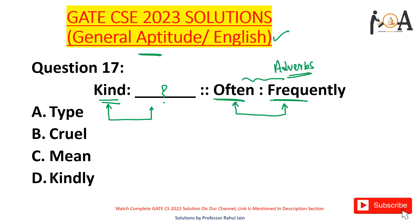Similarly for 'kind', what can you place? The options are: kindly, mean, cruel, or type. I don't think 'cruel' is the right answer, I don't think 'mean' is either. 'Kind' and 'kindly' — but here the relation is of an adverb, so 'kindly' is also out of the box.